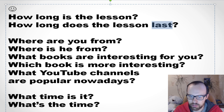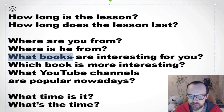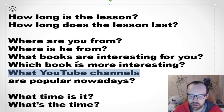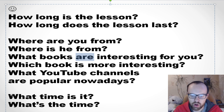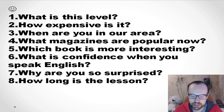'Where is he from?' 'What books are interesting for you?' 'Which book is more interesting?' 'What YouTube channels are popular nowadays?' If you look at questions with 'what', there is usually something after it — 'what books', 'which book', 'what YouTube channels' — and only after that you use the form of to be. 'What time is it?' — if you want to know the time you can ask 'What time is it?' or 'What's the time?'